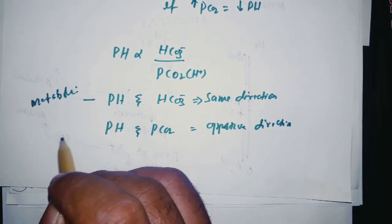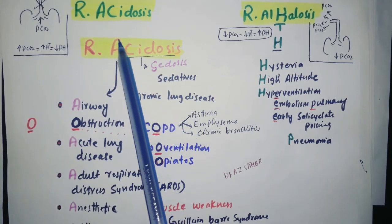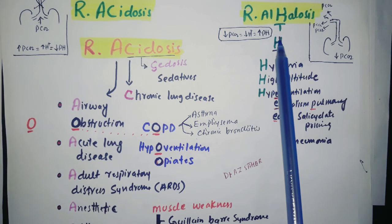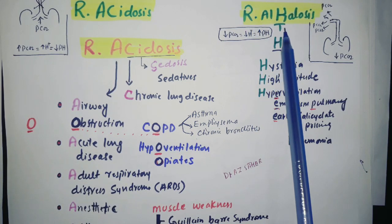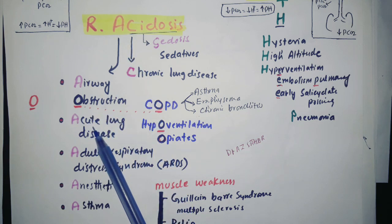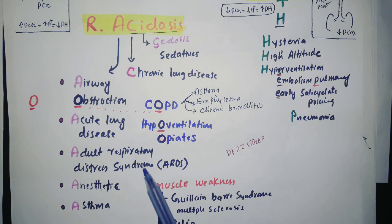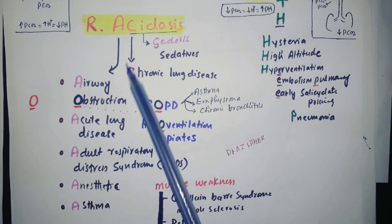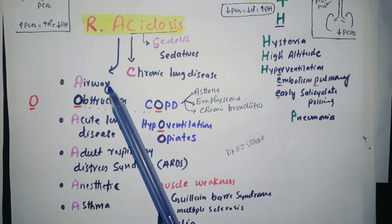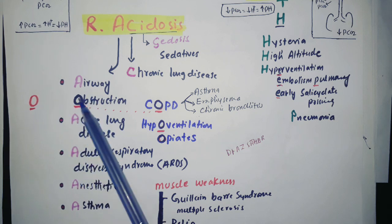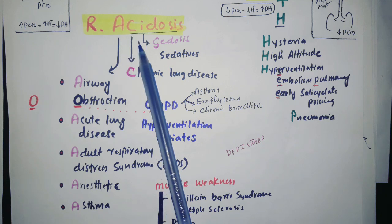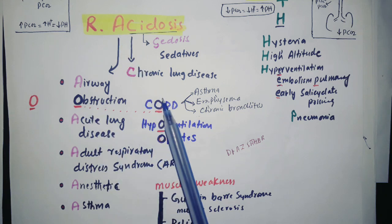For a mnemonic: for respiratory acidosis, write the word ACIDOSIS. The letter A stands for airway obstruction, acute lung disease, ARDS (adult respiratory distress syndrome), anesthetic, and asthma. C stands for chronic lung disease. The O in obstruction refers to COPD, which consists of asthma, emphysema, and chronic bronchitis.